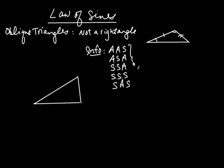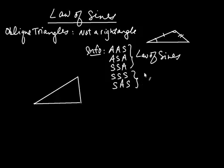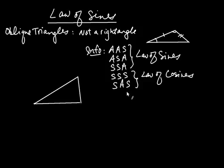It turns out for the first three cases — AAS, ASA, SSA — we can solve using law of sines, and we'll do that in this video. In another video, we're going to solve SSS and SAS using law of cosines. Also notice there is no AAA listed, because knowing all three angles doesn't determine what the sides have to be, so you can never fully determine that triangle.